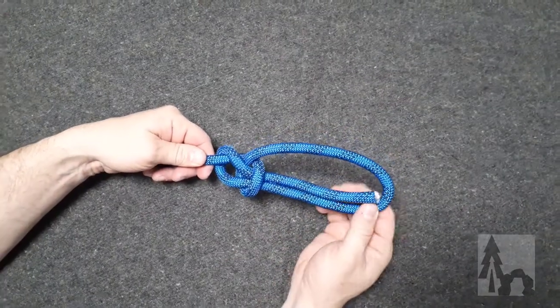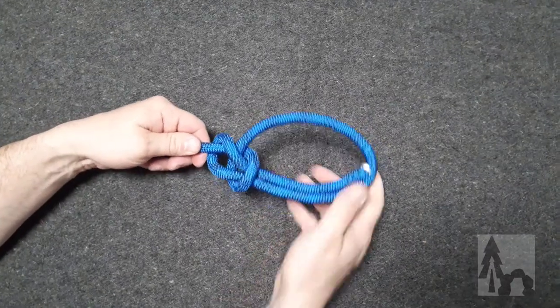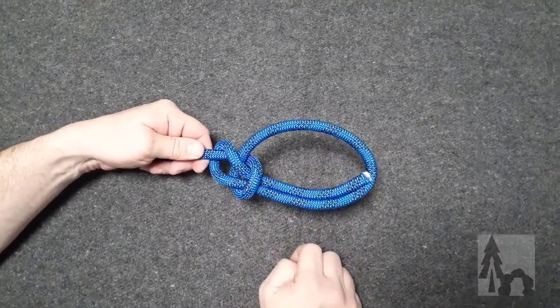You know you did it right if the working end is inside the loop parallel to one of the limbs of the loop. So that's your basic bowline.